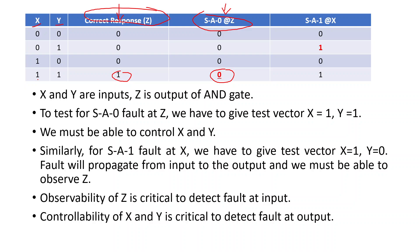To detect the fault at the output, we must be able to control the inputs X and Y. Similarly, if we have a stuck-at-one fault at X, comparing with the correct response, the only change is one row where the value is one instead of zero. To detect the stuck-at-one fault at X, the test vector is X=0 and Y=1. When we apply this test vector, the fault will propagate from the input to the output, and we must be able to observe the output.